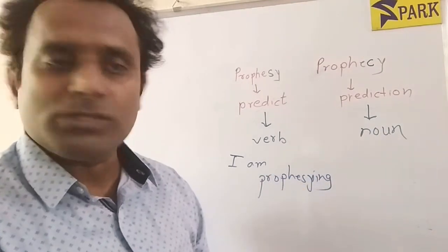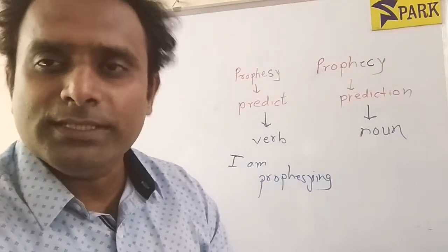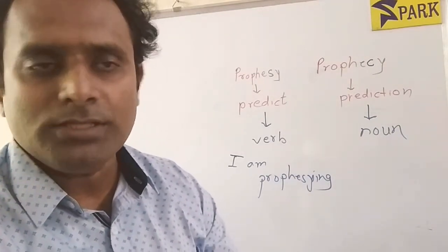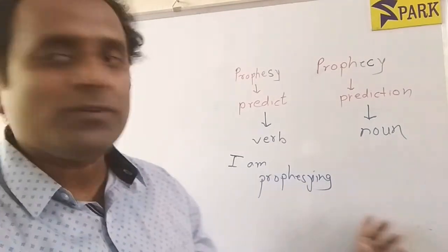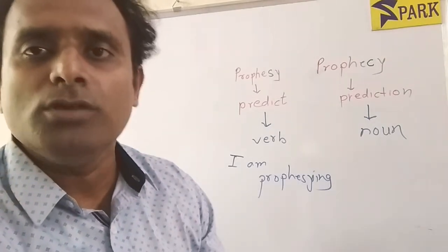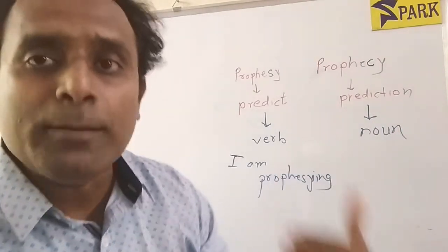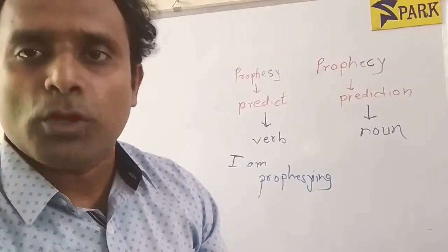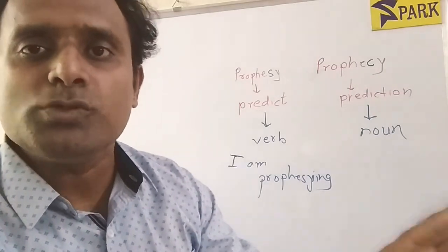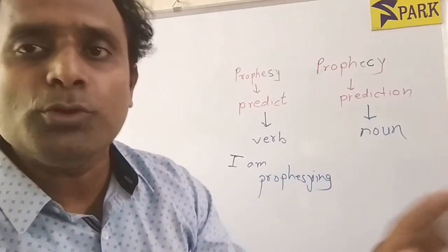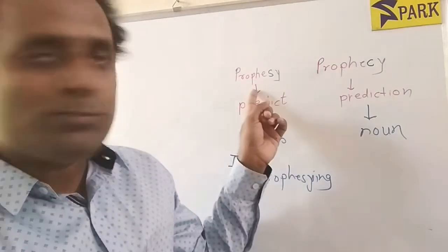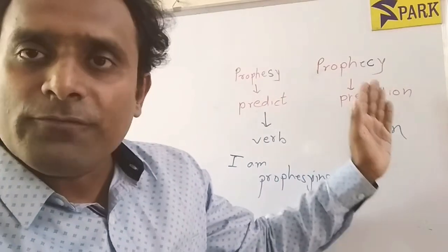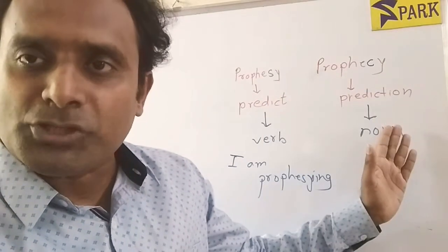If you use C here, it will be incorrect. So the usage will be: 'I am prophesying that there will be a good monsoon,' which means I am predicting that there will be a good monsoon. This is the usage in which the word prophesy is used as a verb.